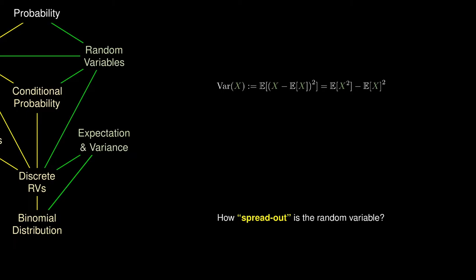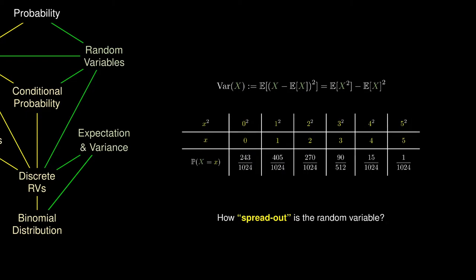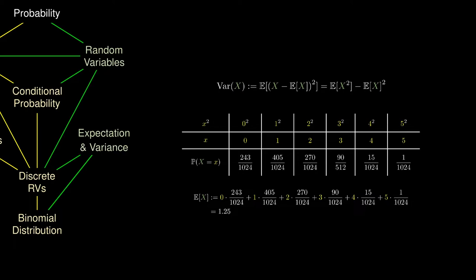To use this formula, we would calculate each outcome squared on top of each outcome, and we can calculate the usual average like before. Furthermore, we're going to calculate the average of the squares. We'll first take 0 squared times 243 over 1024, plus 1 squared times 405 over 1024, followed by 2 squared times 270 over 1024, and so on. This number we obtain is 2.5.